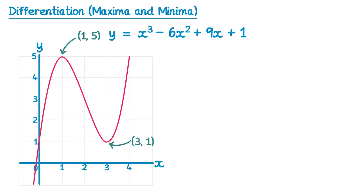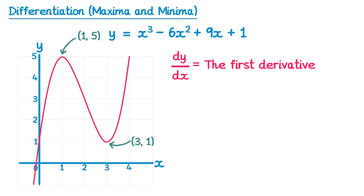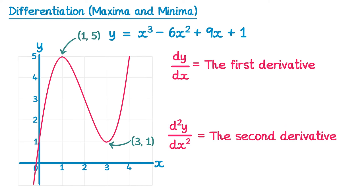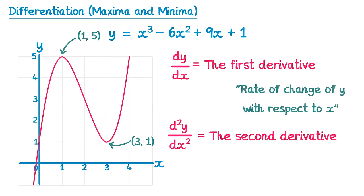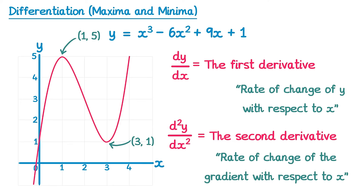You can do this just using differentiation. When you find dy by dx — the gradient function — you're finding what we call the first derivative. You can also find d²y by dx², which is the second derivative, by differentiating the gradient function a second time. You could think of dy by dx as the rate of change of y with respect to x, and d²y by dx² as the rate of change of the gradient with respect to x.